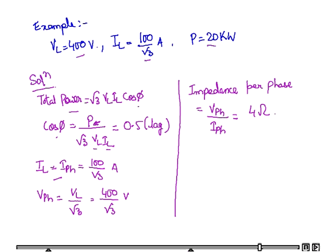IL is IPH and it is 100 upon root 3. VPH is VL upon root 3, which is 400 upon root 3. Impedance per phase is VPH upon IPH. Putting the values, we get the result to be 4 ohms.